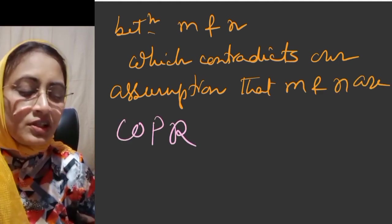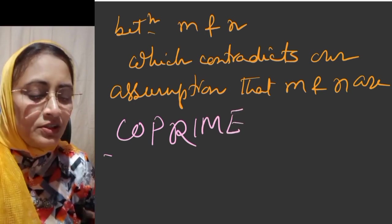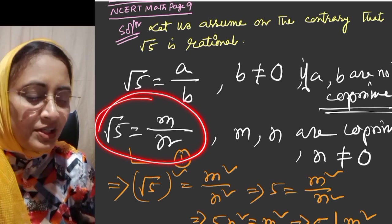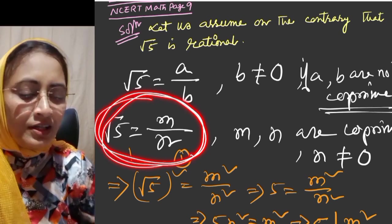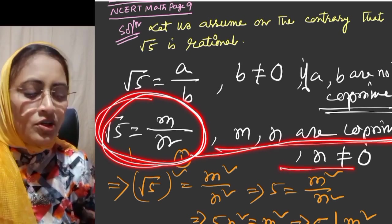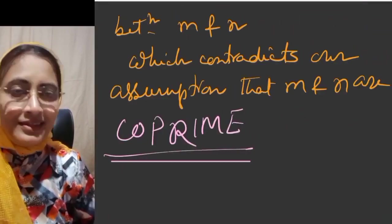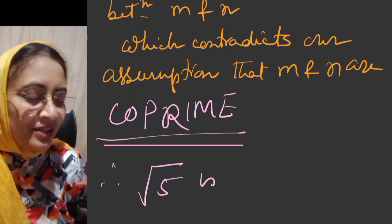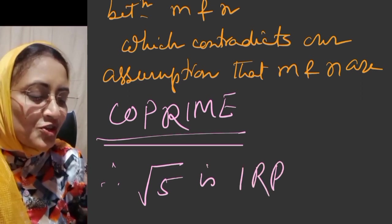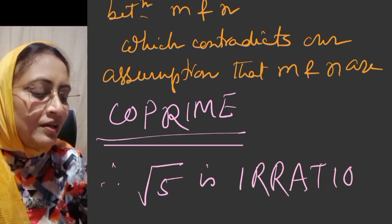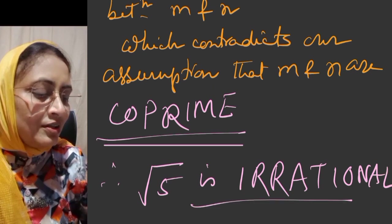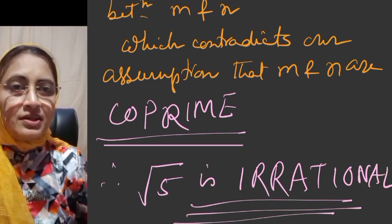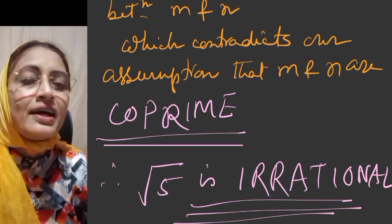So this contradiction shows that our assumption that root 5 is rational is not true. Therefore, root 5 is irrational. We can't fulfill the properties of rational number if we take root 5 as rational.